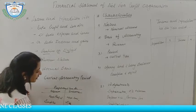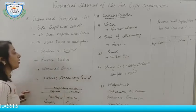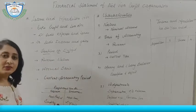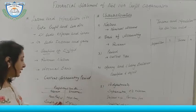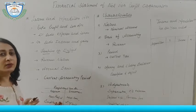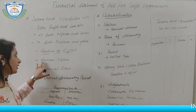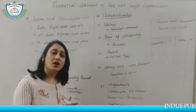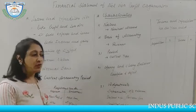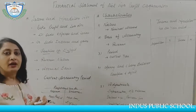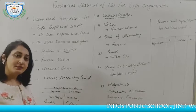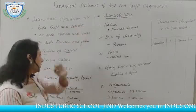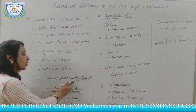The Income and Expenditure Account is revenue in nature, meaning only those revenue expenses and revenue incomes related to the accounting period are taken. It is prepared on actual basis, so non-cash items are also taken — for example, outstanding expenses, prepaid expenses, and depreciation are all included in the Income and Expenditure Account.